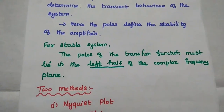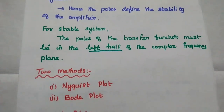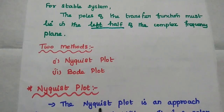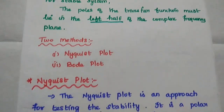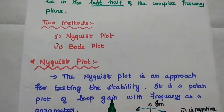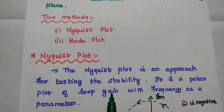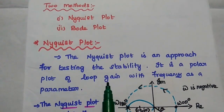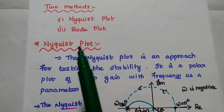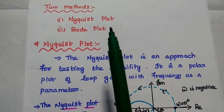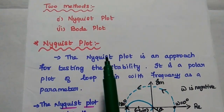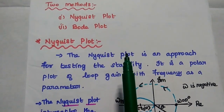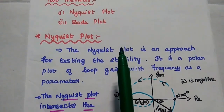We can consider two methods: one is the Nyquist plot, and the other is the Bode plot. These two plots are used to determine the stability of the feedback amplifier, and you may have already studied these topics in control systems engineering.